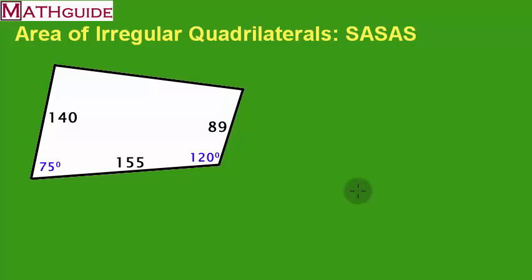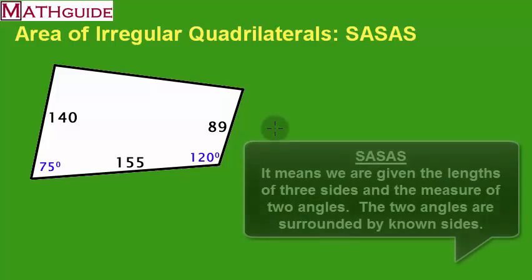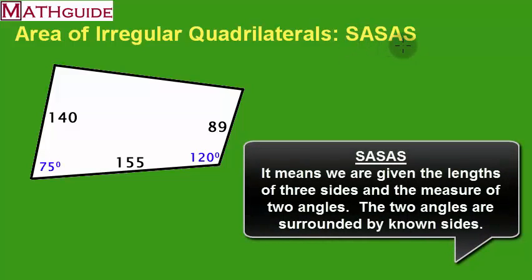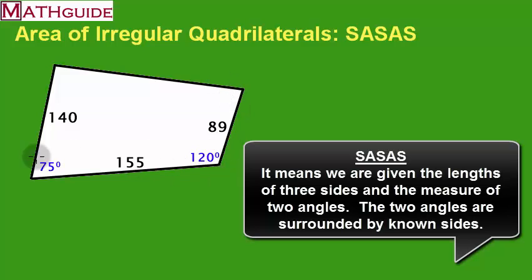Namely, we're going to take a look at this figure, and I labeled it side-angle-side-angle-side because I have three sides and then a couple of angles. These angles are between a pair of sides and another pair of sides — in other words, they're not on the ends away from the sides, they're between sides. That's why I labeled it as such.